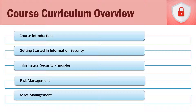Section two is when we start talking about information security — getting started in information security. I introduce you to the many different areas of information security, some of the most valuable IT security certifications, and the state of cybersecurity and cybercrime in 2018 and beyond. Section three is our information security principles section, where we talk about the CIA triad, AAA, least privilege, information security governance, authentication basics, and several other important fundamental concepts.